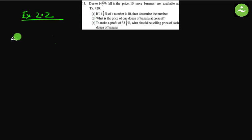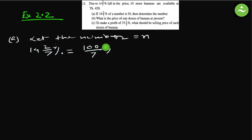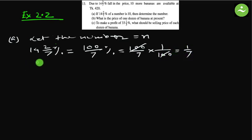Let us start with part (a): if 14 and 2/7 percent of the number is 10, then determine the number. Suppose the number is n. 14 and 2/7 percent means 14 into 7 plus 2, which equals 100 by 7 percent. And percent means 1 by 100, so 100/7 multiplied by 1/100 — simplifying, 100 and 100 cancel, giving 1/7.